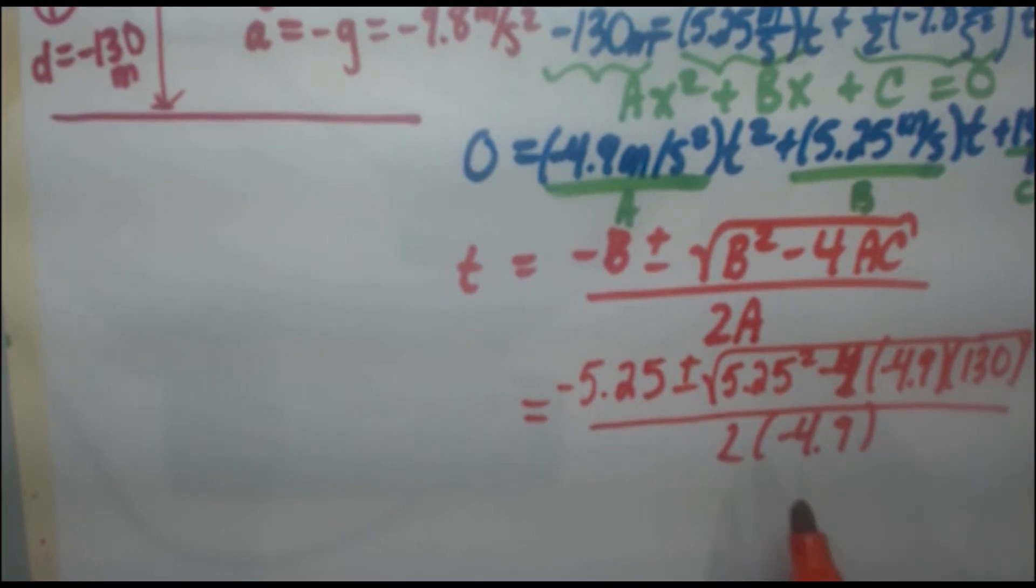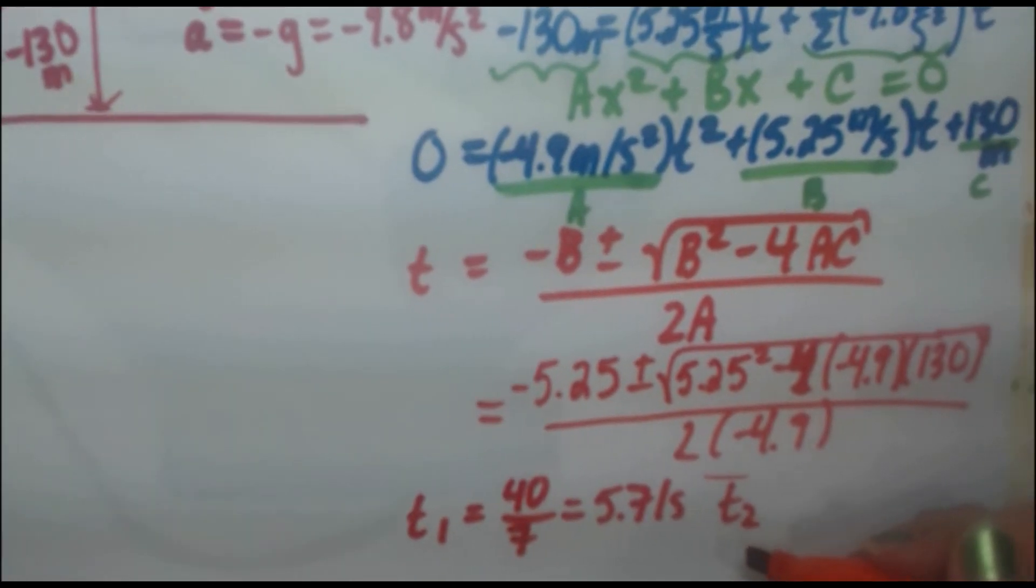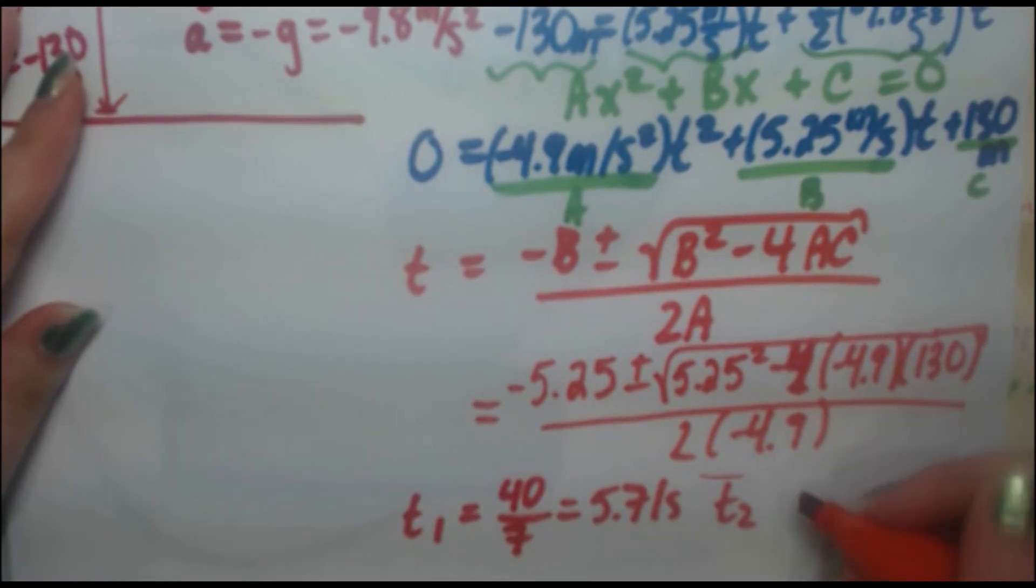And when you calculate this out, you're going to get two roots. It's going to be negative 5.25 plus this number divided by this number. And negative 5.25 minus this number divided by this number. So you're going to get two answers. And when you actually work it out on your calculator, you're going to find that the first answer is 40 over 7, which you can simplify to 5.71 seconds. And the second answer is going to be negative 65 over 14, which is equal to minus 4.64 seconds.